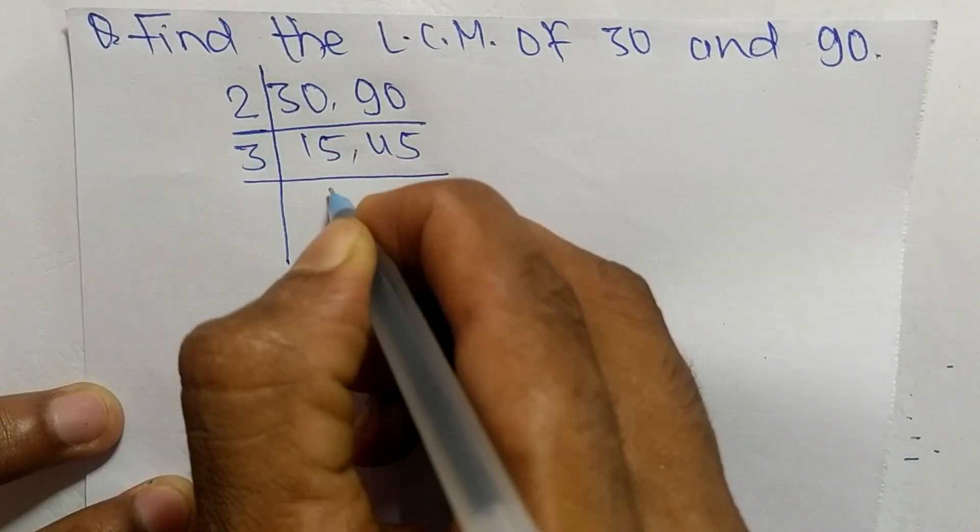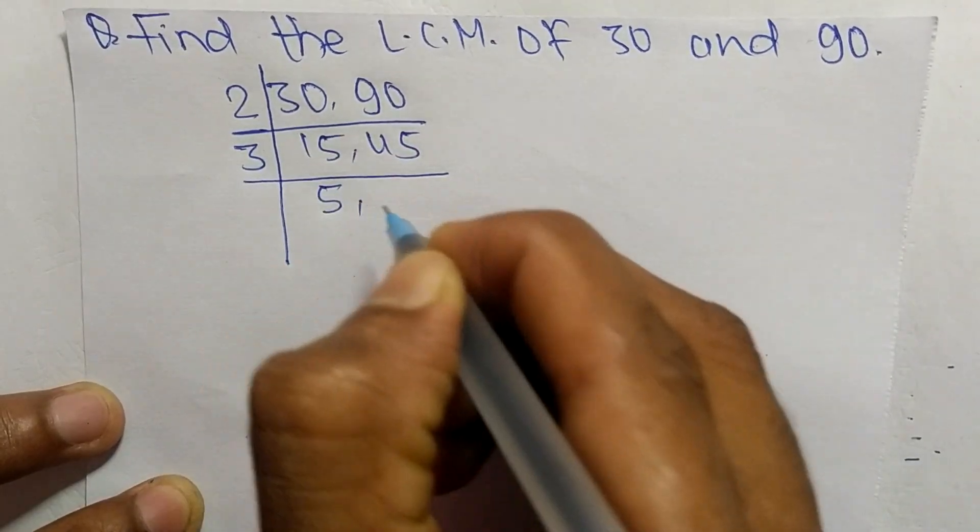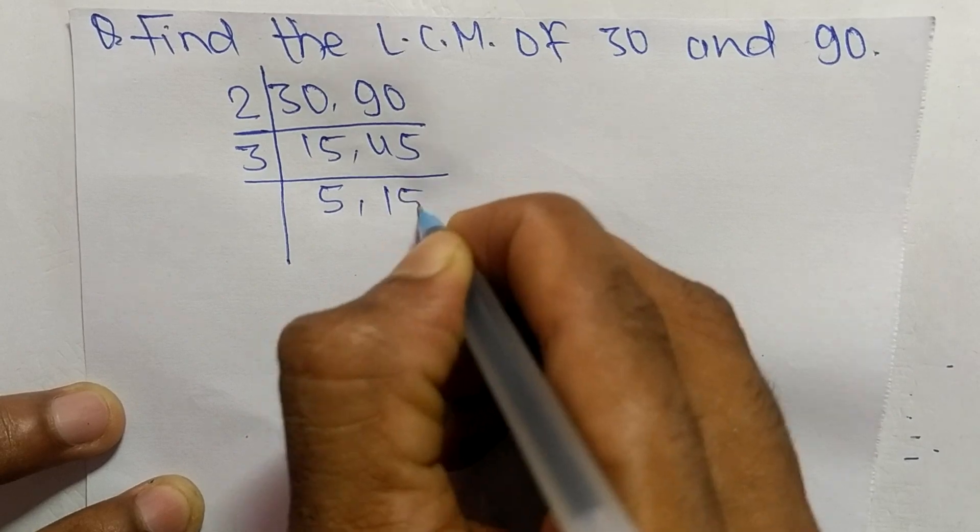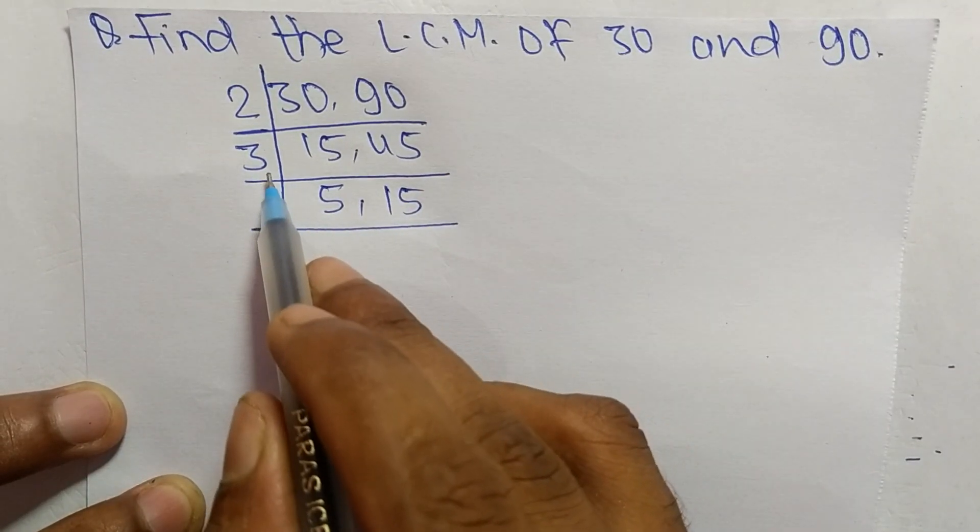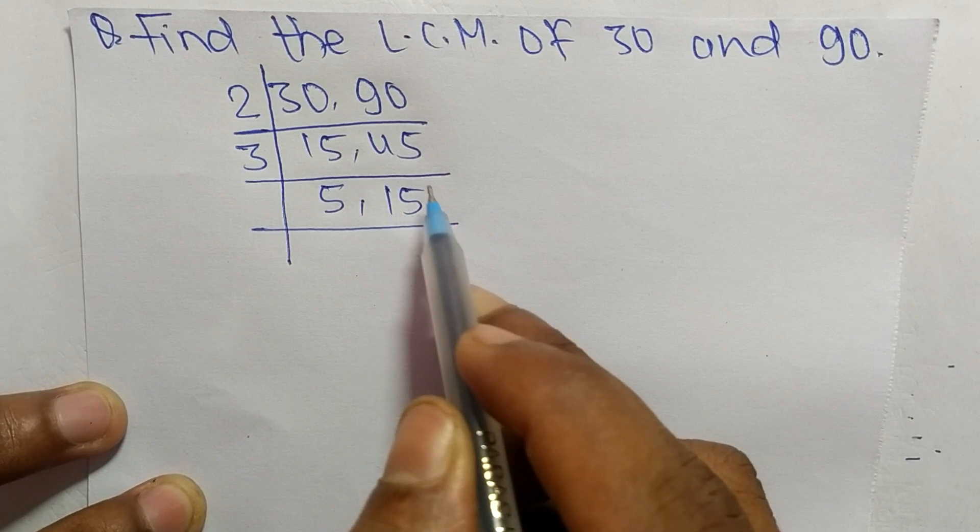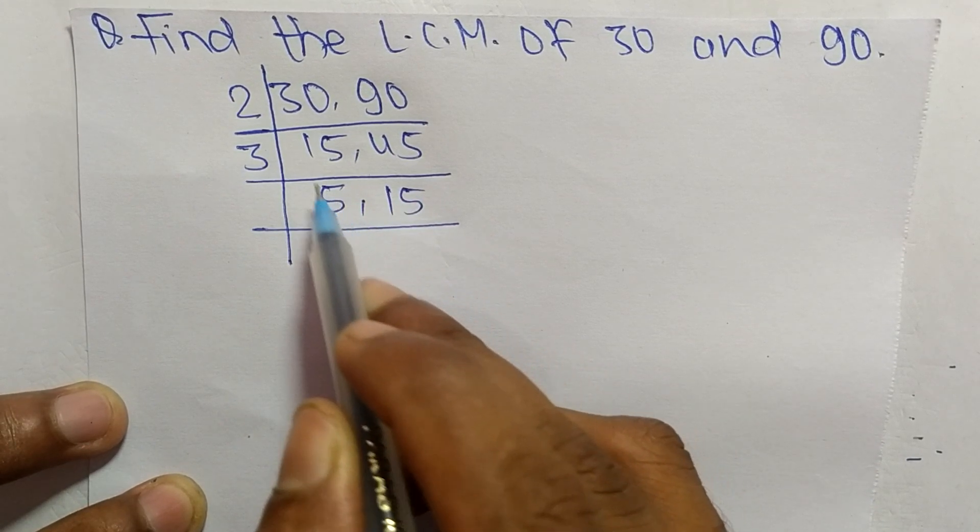The number is 3. So 3 times 5 means 15, and 3 times 15 means 45. Now again, 3 can divide 15 here but can't exactly divide 5.